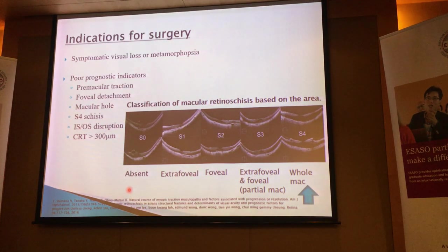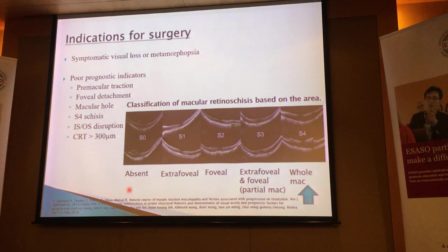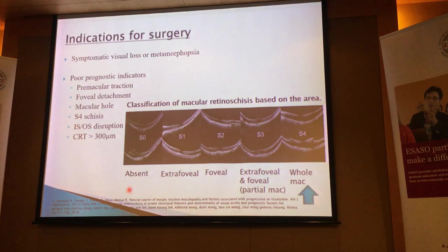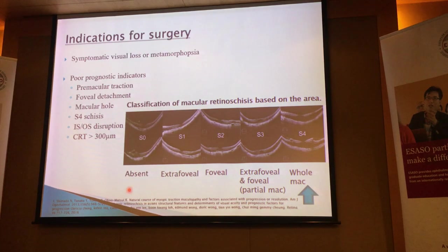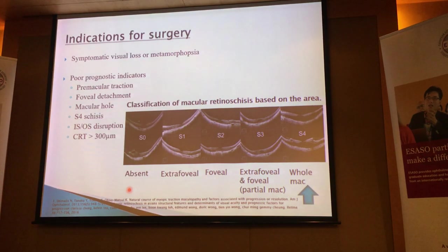What about indications for surgery? I would recommend surgery if the patient is symptomatic — if there is symptomatic metamorphopsia, for example. If you have poor prognostic indicators, like macular traction, significant ERM, or significant EMT. If the patient already has foveal detachment, that's something I would consider very seriously. If there's a macular hole, there are very few options left. If you have an S4 schisis — involving the entire macular region — you probably want to push for intervention earlier. If you have IS/OS junction disruption, those are the ones to treat earlier as well. If the central retinal thickness is more than 300 microns, that would be something I would also consider.